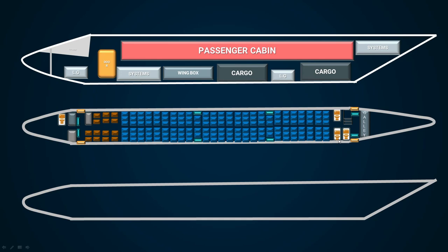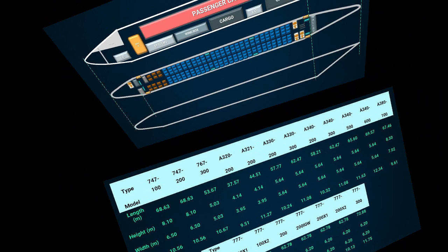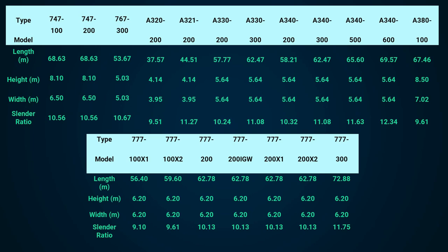Step one is to collect existing aircraft data based on operational requirements like speed, range, number of passengers, length, height, width, and fineness ratio. Based on your aircraft, additional parameters may be added as needed. This is data collected based on a 440-seater passenger aircraft. Study the fuselage arrangements in detail.